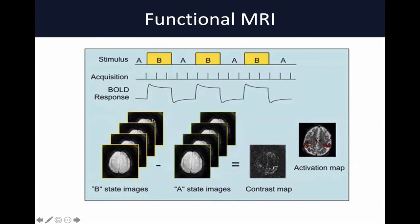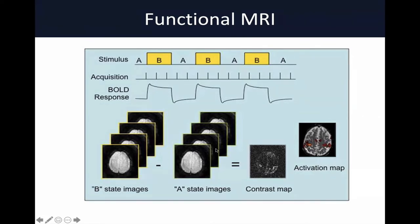A basic functional MRI study starts with two states: an A state, which would be a resting state, and a stimulated state called B. The functional MRI scanner scans at predetermined time points, capturing the BOLD response as the stimulus is delivered. You average the signal intensity over multiple repetitions, then subtract the average of your activated state from your resting state to generate a net activation map. This is the kind of figure we will see as we look into the urological literature.